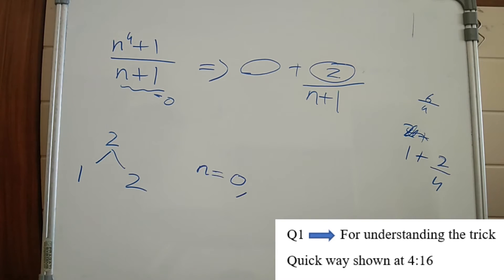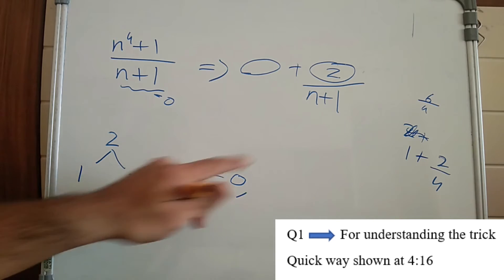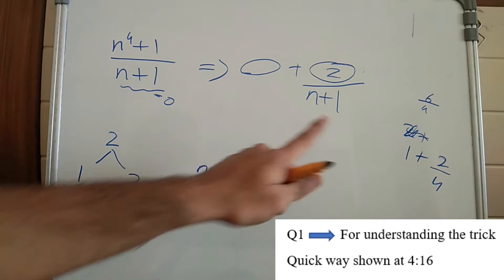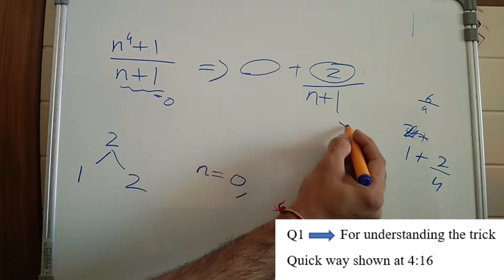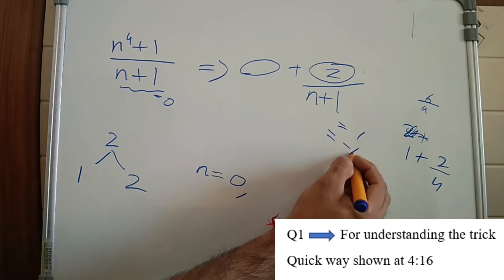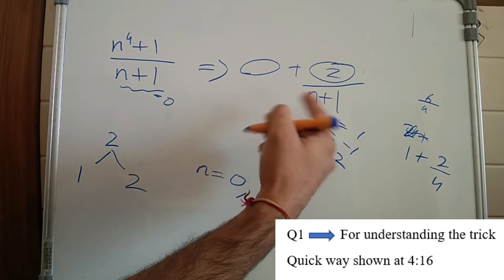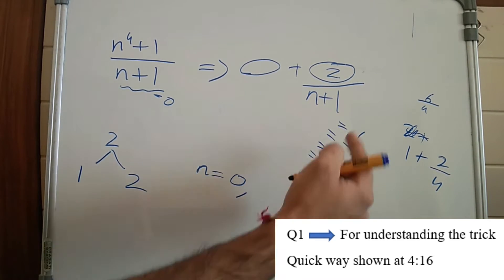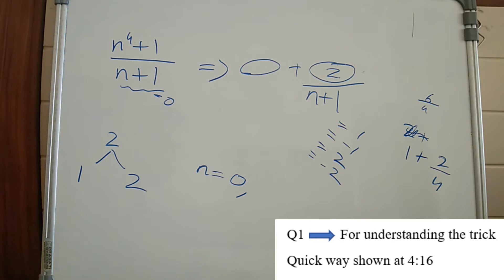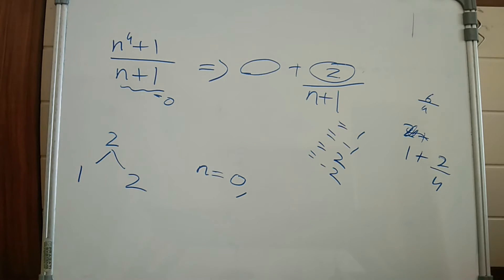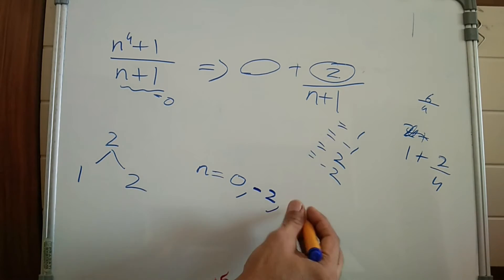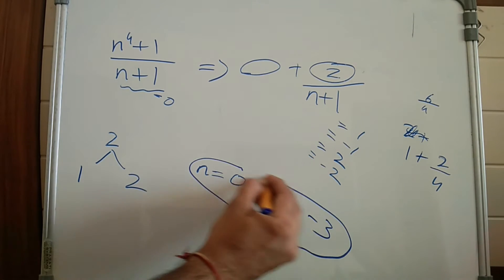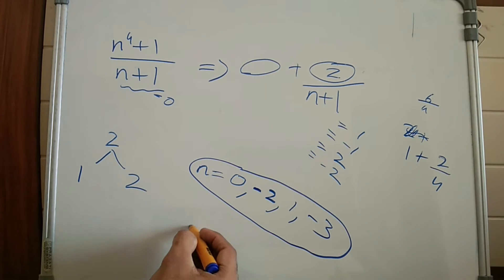Since the question asks for integral values of n, I have to look at negative values as well. So I put n plus 1 equal to 1 (n=0), then n plus 1 equal to minus 1 (n=minus 2), then n plus 1 equal to 2 (n=1), and n plus 1 equal to minus 2 (n=minus 3). So n takes 4 values, and the answer is 4.